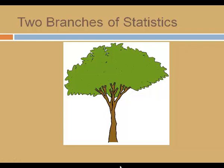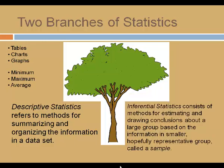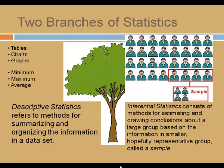But we divide the field of Statistics into two branches: Descriptive Statistics and Inferential Statistics. Descriptive Statistics refers to methods for summarizing and organizing the information in a data set. Creating tables, charts, and graphs are part of Descriptive Statistics. The minimum, maximum, and average summarize data, and are also part of Descriptive Statistics. Inferential Statistics consists of methods for estimating and drawing conclusions about a large group based on the information in a smaller, hopefully representative group called a sample. Most introductory Stats classes will cover both Descriptive Statistics and Inferential Statistics.